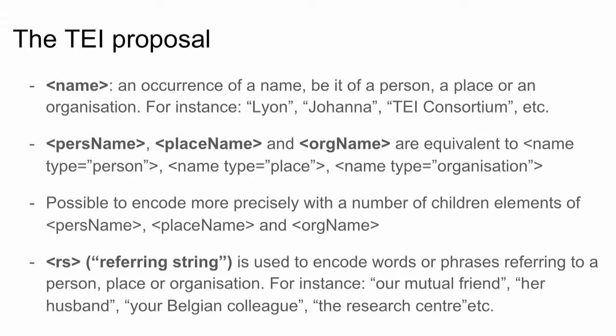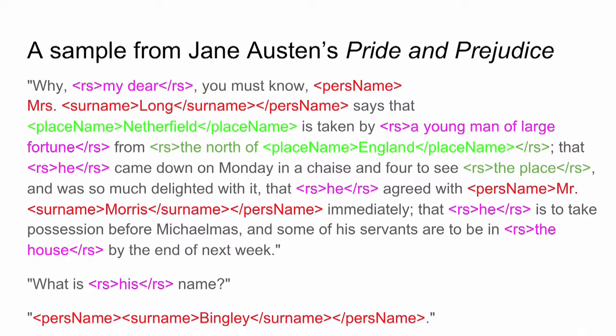When you have references to names — person names, organization names, or place names — you are going to use the RS element, where RS stands for 'reference string'. It is used to encode phrases or words referring to a person, a place, or an organization. So this is how the same passage would look encoded with this principle: references to people or places are encoded with RS, people's names are encoded with persName, and place names are encoded with placeName.